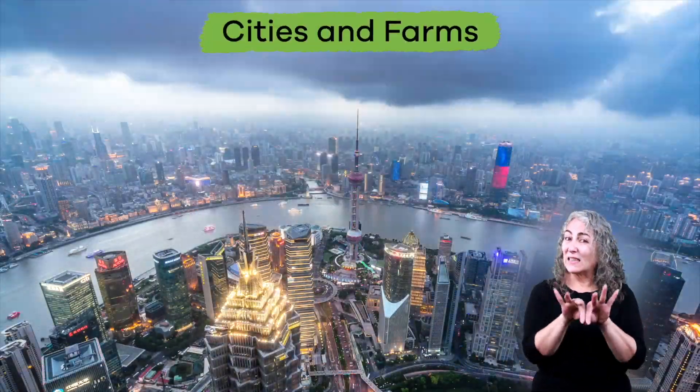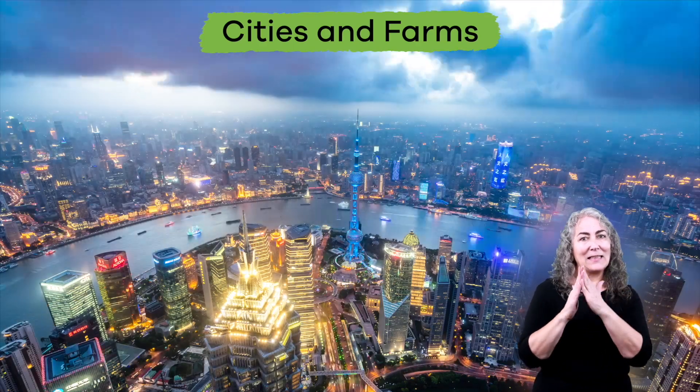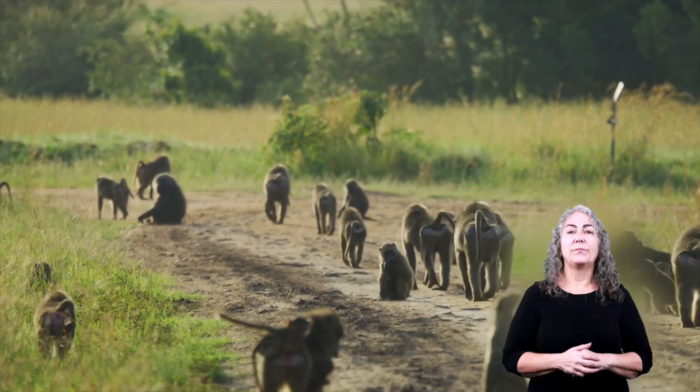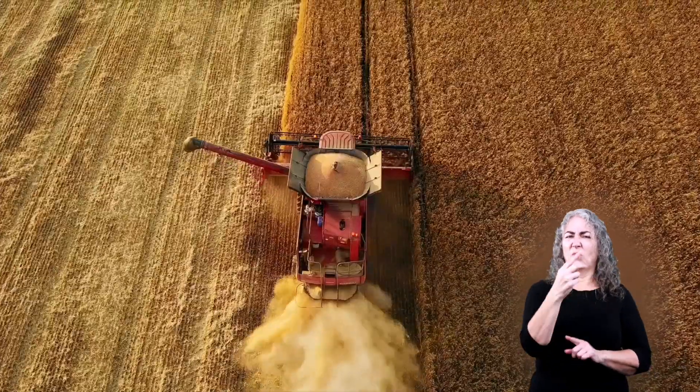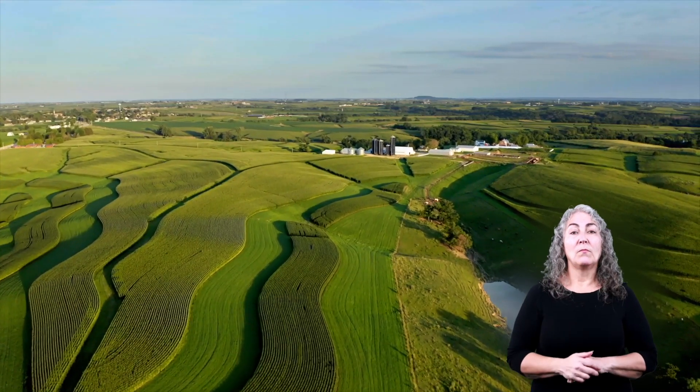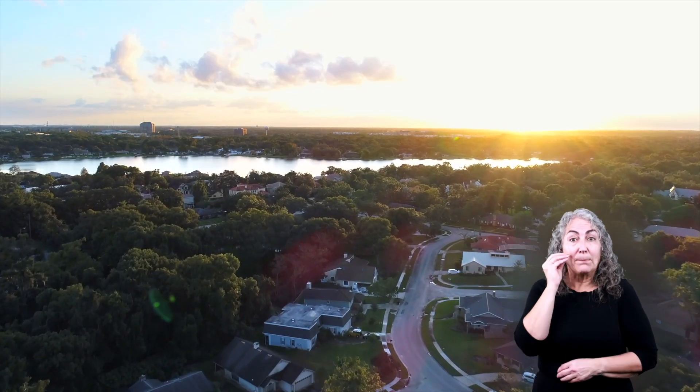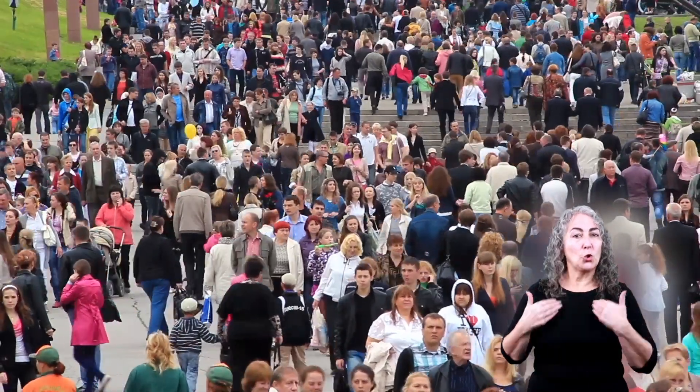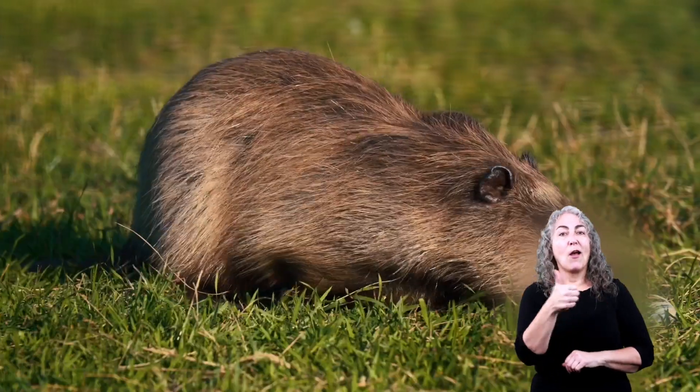Last but not least, we have cities and farms. After talking about all of these other kinds of habitats, it might seem strange to include these last two, but they are both just as important. In fact, they just might be the habitats you live in. Cities are home to humans, pets, bugs, and other small mammals and birds. Farms, too. Remember, if you live there, it is a habitat.